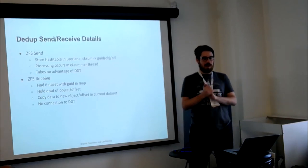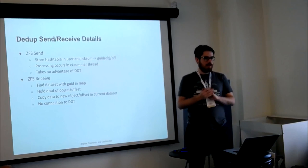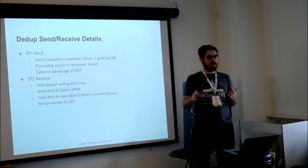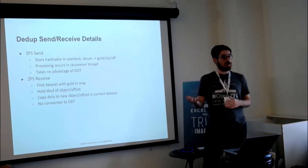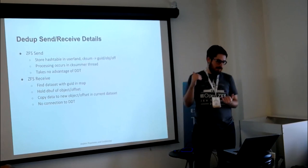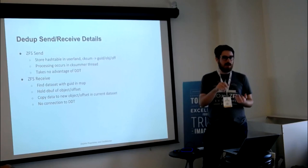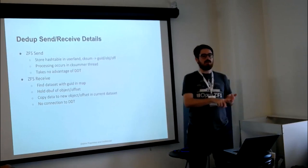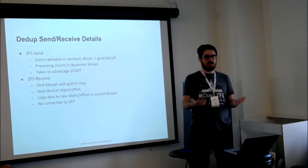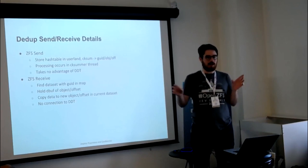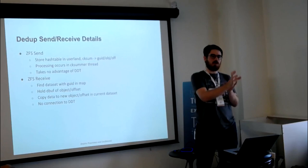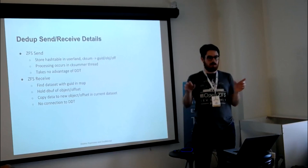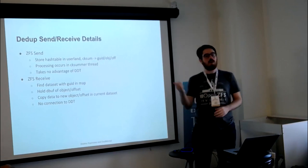On the send side of DDup Send, we create a hash table in user land that is very similar to the DDup table stored in the kernel when using DDup. It's a mapping from a checksum to a combination of a snapshot's GUID, the object in that dataset, and the offset within that object. Every time it sees a new record, it looks at the checksum. If it's new, it stores it in the hash table. If it's already seen, it finds the value in the hash table and replaces the entire record with a write-by-ref record pointing to the other data.